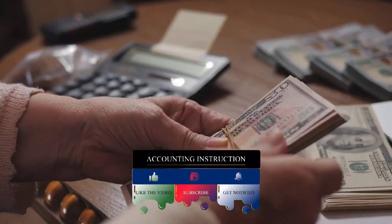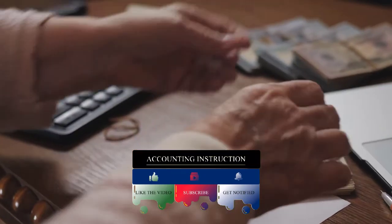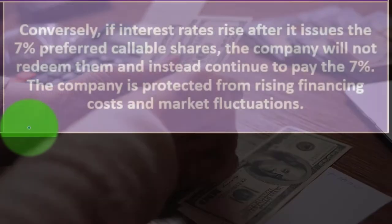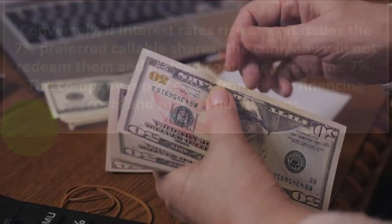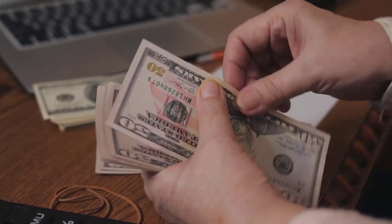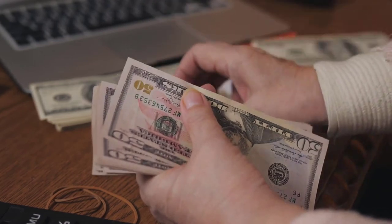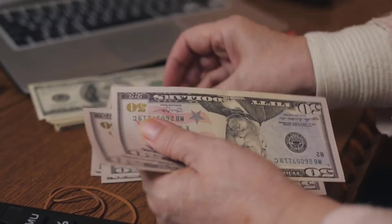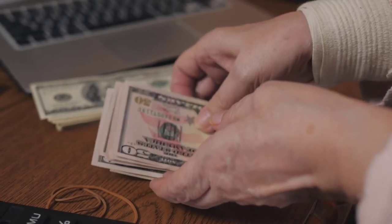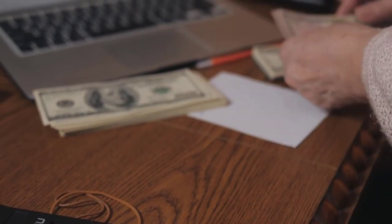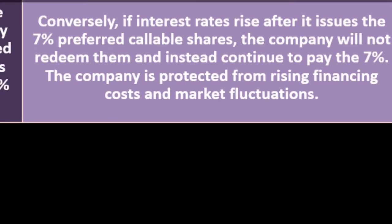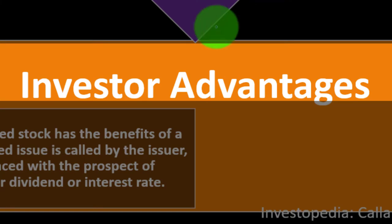Just like with a mortgage — if interest rates go up, you wouldn't refinance to pay more. If you're on the lending side, it's nice to have the refinancing option, but if market conditions don't favor it you stay where you are. If market rates went up and you had a fixed rate, your rate is now lower than the market. So the company is protected from rising financing costs and market fluctuations.